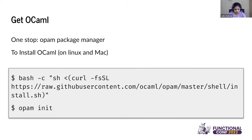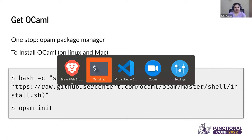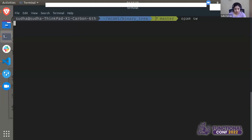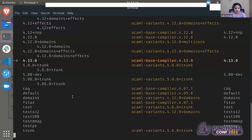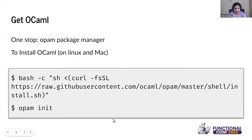Just to show how this works, I can show the different switches I have right now. These are all the switches I have — I have so many, I know. Usually we don't need different switches. I had been hacking on the compilers, so I have different switches. It's just running this one line that sets up opam and we are off to a start.